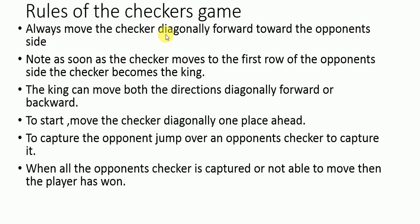Always move the checker diagonally forward towards the opponent's side. As soon as the checker moves to the first row of the opponent's side, the checker becomes a king. The king can move in both directions — diagonally forward and backward.